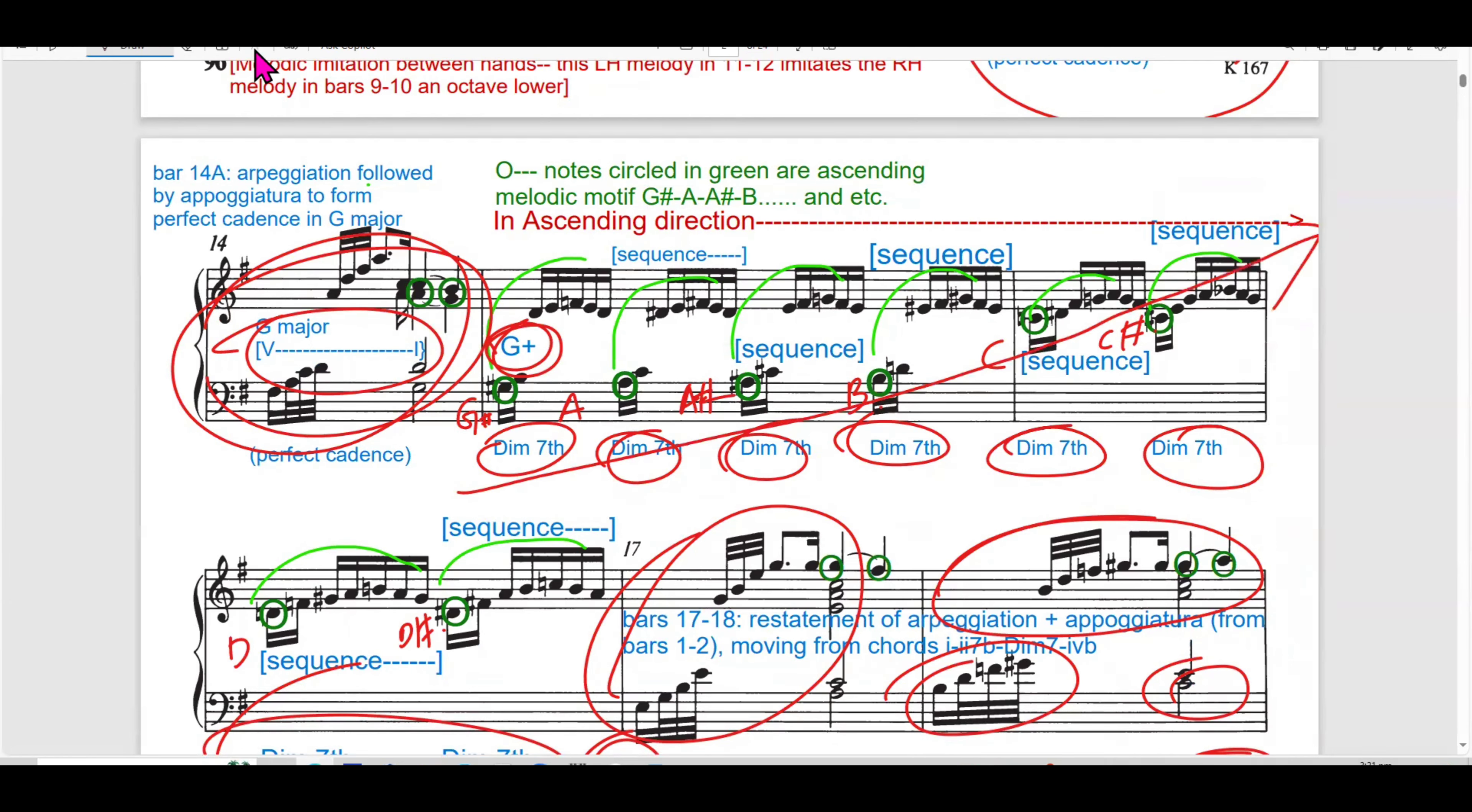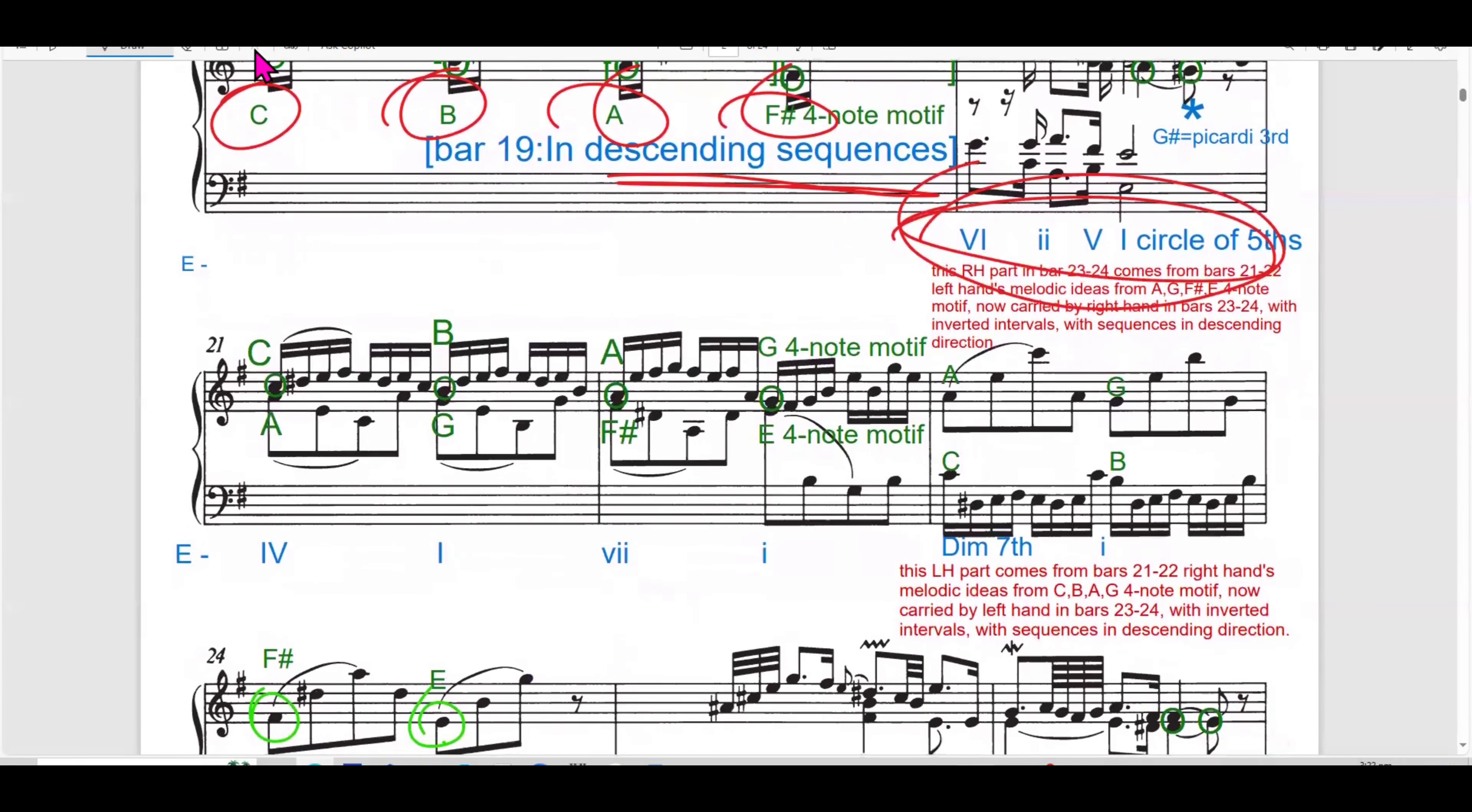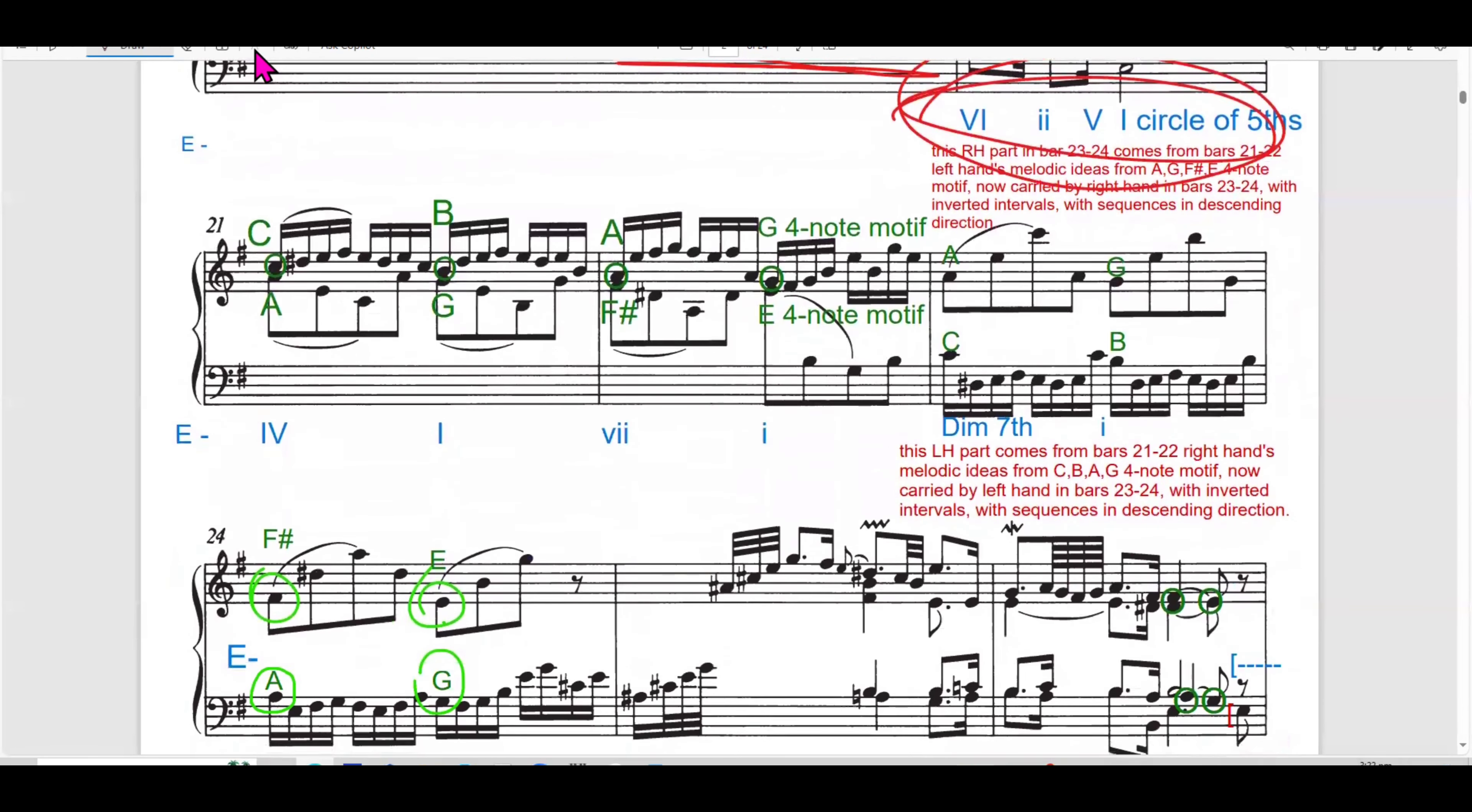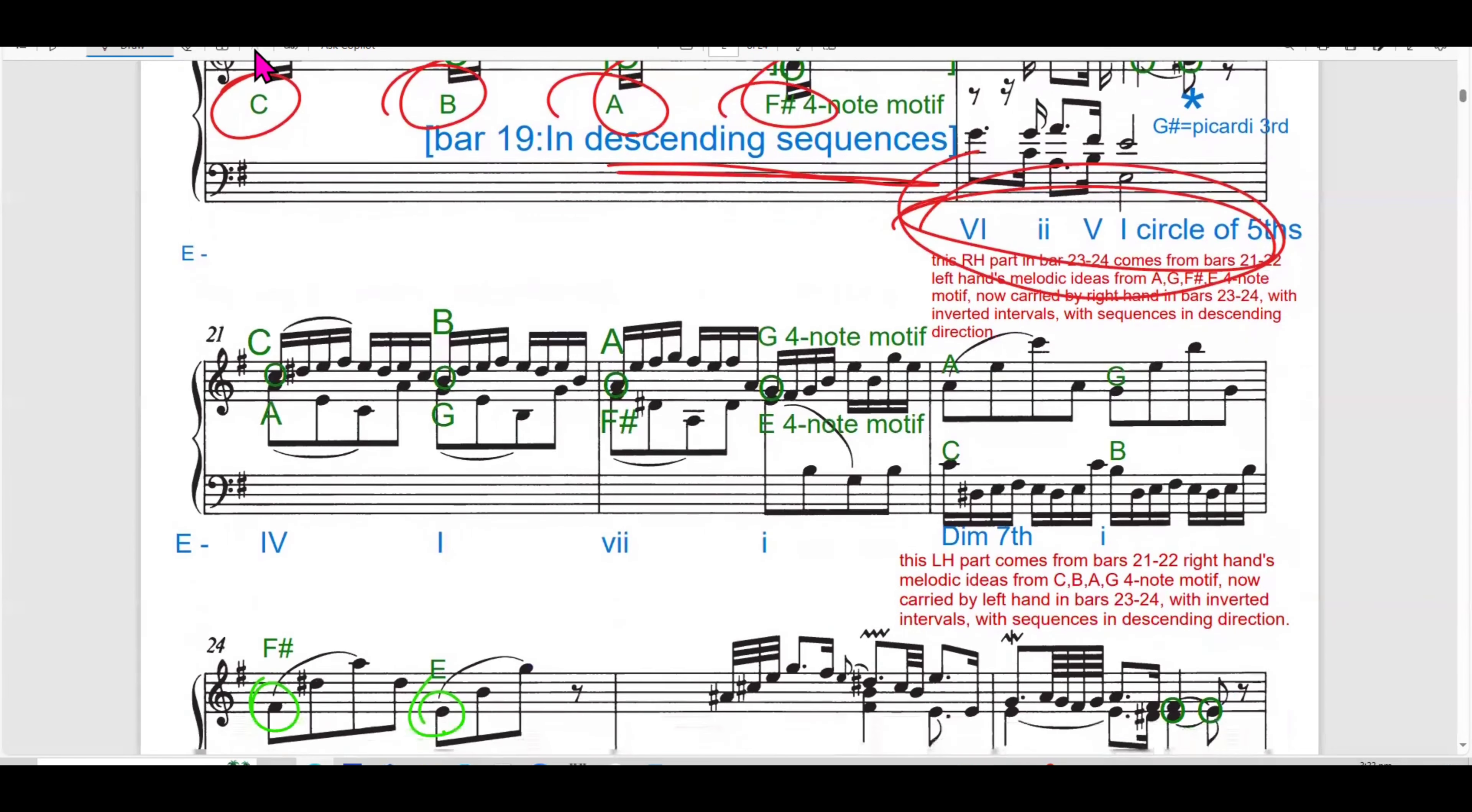The right and left hand continue their interaction, maintaining the contrapuntal texture established earlier. The harmonic progression is enriched by use of diminished 7 to prepare for the upcoming sequence. In bar 19 to 20, there are descending sequence and circle of 5th progression.